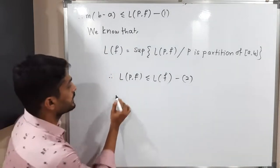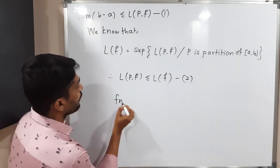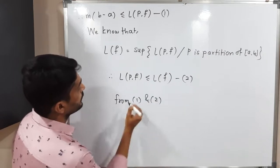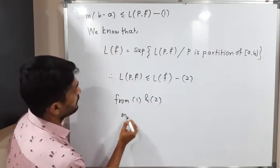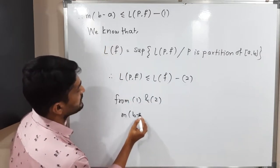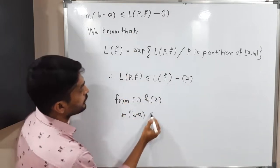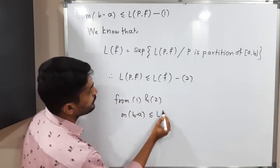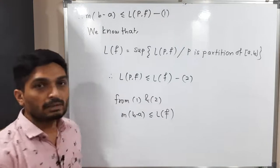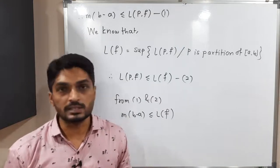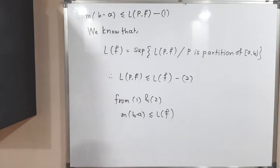Combining the first and second inequalities: m(b − a) ≤ L(P, f) and L(P, f) ≤ LF, we conclude that m(b − a) ≤ LF. In this way, we have proved the required inequality. Thank you, bye bye.